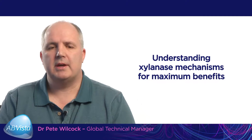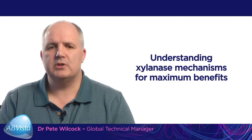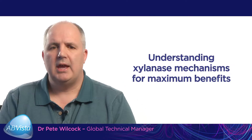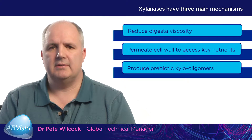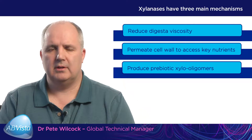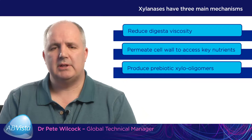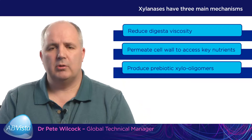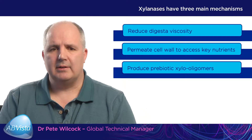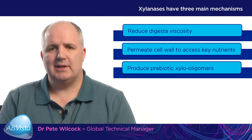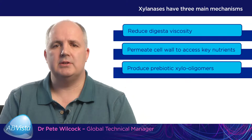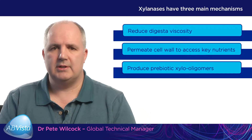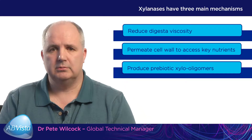Xylanases have three main mechanisms. The first mechanism is the ability of the xylanase to reduce digestive viscosity. Typically, a soluble arabinoxylan will increase the digestive viscosity, which impedes nutrient utilization by the animal.